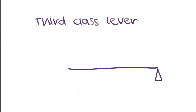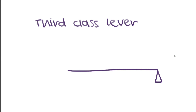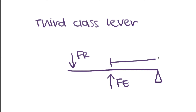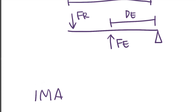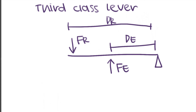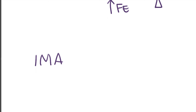The third class lever also has the fulcrum at one end, but the resistance force is on the outside and the effort force is on the inside. This creates a DE and DR where DR is always greater than DE. Opposite to the second class lever, the IMA of a third class lever will always be less than one.